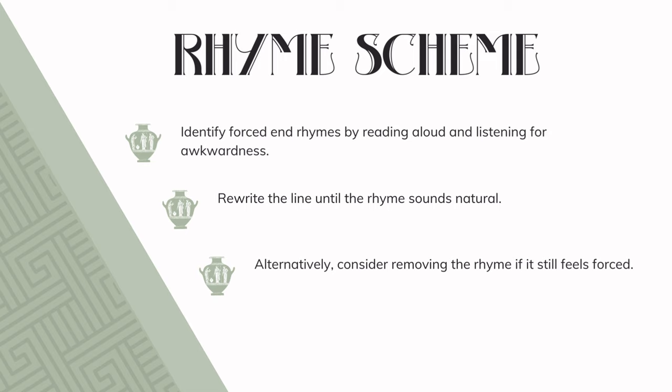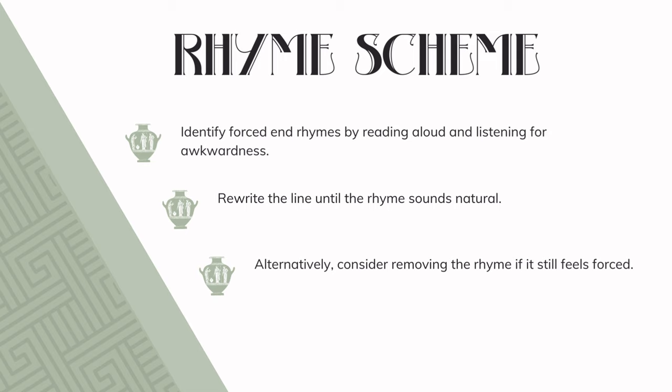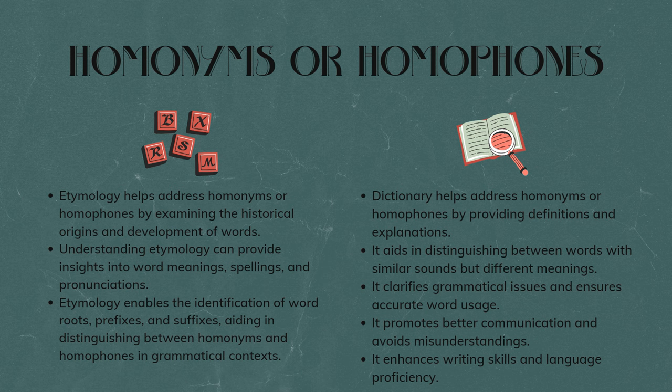Furthermore, I read the poem out loud several times, listening carefully to its meters, pace, homonyms, homophones, and tone. I want to point out something about rhyme scheme and homonyms and homophones. The best way to determine if an end rhyme sounds forced is by reading out loud and listening for awkwardness in speech, then rewriting it until it sounds natural or removing it. As for homonyms or homophones, having a trusty dictionary and etymology source will help ensure you are using grammatically correct words.